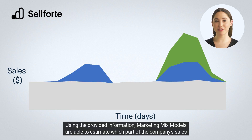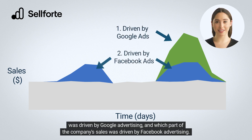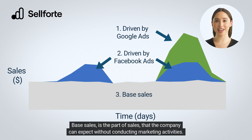Using the provided information, marketing mix models are able to estimate which part of the company's sales was driven by Google advertising, and which part was driven by Facebook advertising. The part of sales which is not explained by marketing is called the base sales — the part of sales that the company can expect without conducting marketing activities.